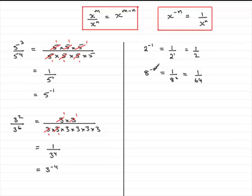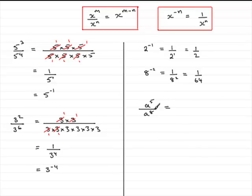You don't have to be using numbers all the time — you can use letters. For instance, suppose you had to simplify a to the power 5 divided by a to the power 8. I don't want to write this out as a times a times a, etc., all over a multiplied by itself 8 times, when I know this is going to be a to the power minus 3. And a to the power minus 3 is 1 over a to the power 3.